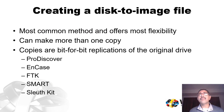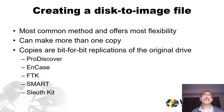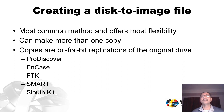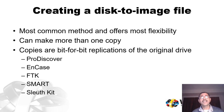Creating a disk-to-image file is the most common method and offers the most flexibility for your investigation. With this method, you can make one or many copies of a suspect drive — these copies are a bit-for-bit replication of the original drive. You can use forensic tools like ProDiscover, EnCase, FTK, SmartSuite, or X-Ways Forensics to read the most common types of disk-to-image files. These programs read the disk-to-image file as though it was the original disk. For older systems, you could use an MS-DOS version, though MS-DOS tools can only read data from a drive.